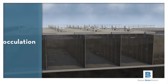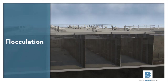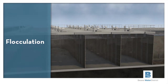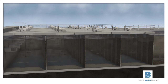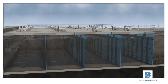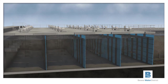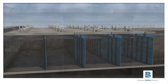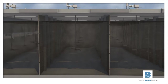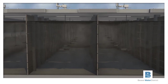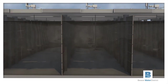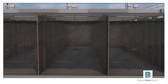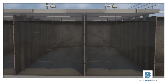Mechanical mixers in the flocculation basins bring the smaller particles close enough together to form larger, heavier floc. There is a baffle wall separating each of the four stages in the flocculation basin. Each row of mixers is rotating at a lower speed than the previous row to prevent the delicately formed floc particles from breaking apart.